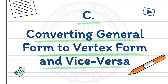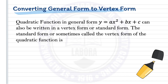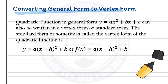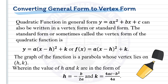Converting general form to vertex form and vice versa. A quadratic function in general form y equals ax squared plus bx plus c can be written in vertex form: y equals a times quantity x minus h squared plus k. The graph is a parabola whose vertex lies at (h, k), where h equals negative b over 2a, and k equals 4ac minus b squared over 4a.